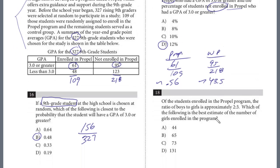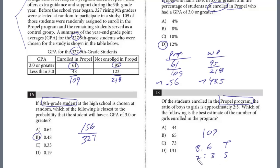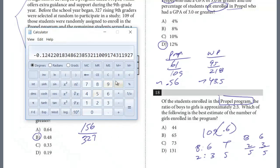Let's do the last question for this set. Of the students enrolled in the PROPEL program, the ratio of boys to girls is approximately 2 to 3. Which of the following is the best estimate of the number of girls enrolled in the program? Again, we're only talking about PROPEL and we know there are 109 students. Any time you have a ratio — boys to girls is 2 to 3 — a good technique is to add these up and use the total. So boys will always make up 2 fifths and girls will make up 3 fifths of any number. We're looking for 3 over 5, which is 0.6 times 109. That gives us 65.4, so the answer is B.